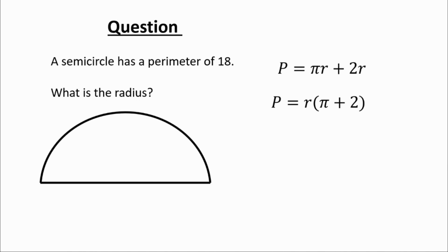Then what we can do is factorize. We've got an r in both terms so we can take r to the front and then r times π would give us the πr. R times 2 would give us the 2r. So we factorize that, that's going to make things a lot easier.